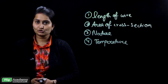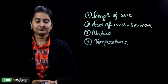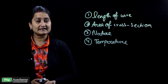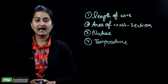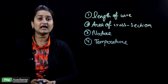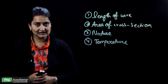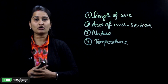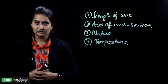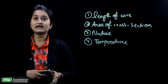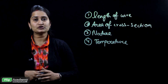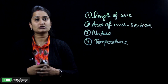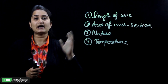Now suppose if we take 2 wires of the same length and same area of cross section, how will we distinguish them? We will distinguish on the basis of the nature of the material. Copper has a different resistance, aluminium has a different resistance, and alloys have a different resistance. So depending upon the nature of the material, the resistance or conductivity increases or decreases. The fourth factor is temperature of the electric wire. When we heat up the wire or provide heat energy to it, the resistance is directly proportional to the temperature — if temperature increases, the resistance also increases.